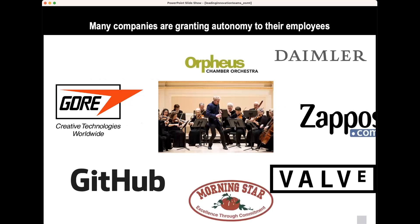Many companies have started to realize this. Entrepreneurial companies have the luxury of choosing their collaborators and the ideas they want to work on, but even larger companies are tinkering with this. The most known examples include Daimler, Valve, Morningstar — which shows it's not only software companies, but also a company developing tomato cans that can do this — as well as the Orpheus Cambridge Orchestra, Gore for different kinds of materials, and GitHub.